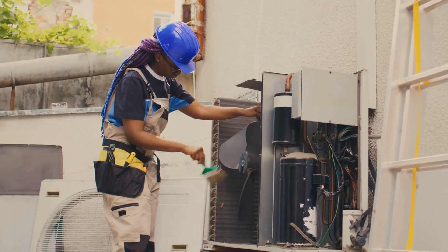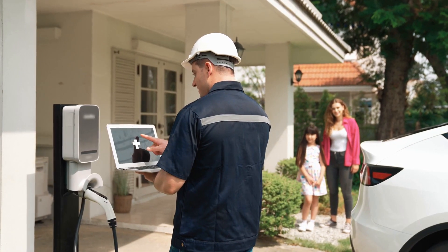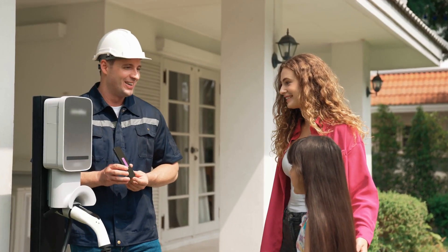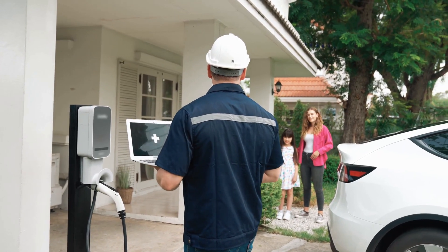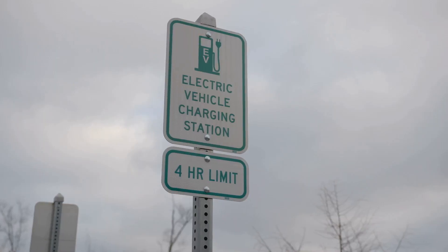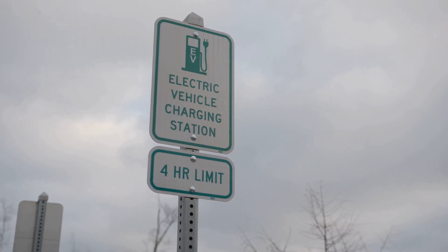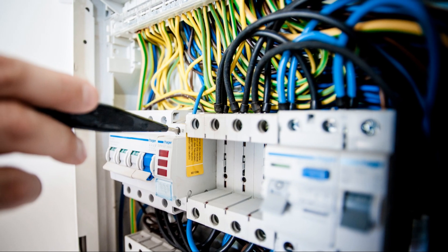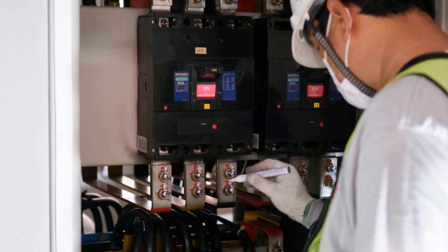They can perform a thorough electrical load calculation to determine the total electrical demand in your home. This calculation considers all your existing appliances, lighting, and any future electrical needs, including that shiny new EV charger. Section 8 of the Canadian Electrical Code provides specific guidelines for electrical load calculations. It's not something you want to guesstimate or try to figure out yourself.